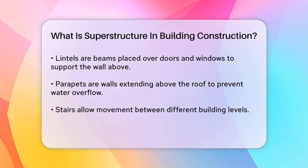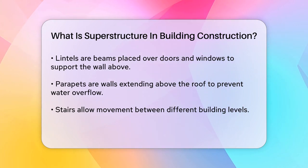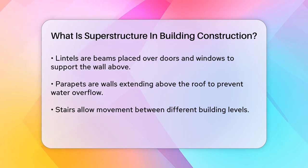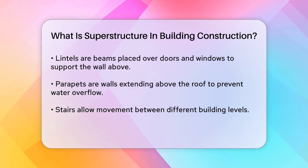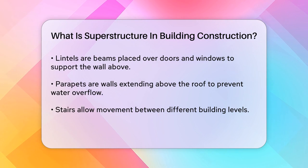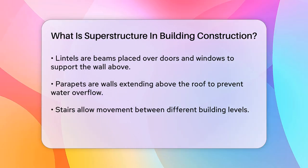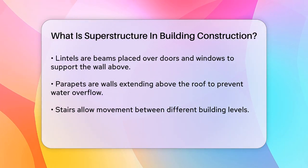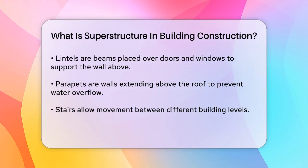Floors and roofs are also critical components. Floors are the horizontal surfaces where you walk and place furniture, while the roof protects the building from the elements. There are various types of roofs, each suited to different climates and building designs.